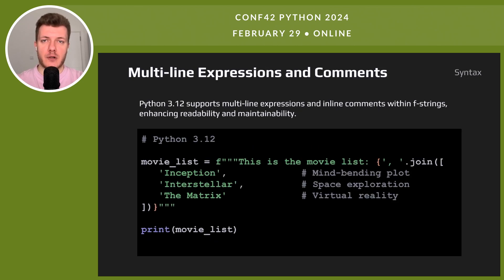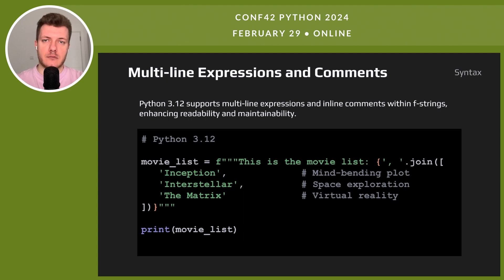Python 3.12 introduces multiline f-strings — you can now include comments right inside them. This makes complex strings clearer and easier to maintain. Here is how you can format a movie list with comments, where each movie is annotated with its unique attribute. This feature enhances code readability significantly, especially when dealing with intricate string constructions.